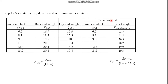The dry unit weight is determined using the formula: dry density = bulk unit weight / (1 + water content). You can refer to the video on basic soil mechanics formulas for a derivation. For the zero air void curve, the dry unit weight equals the specific gravity multiplied by the unit weight of water, divided by (1 + water content × specific gravity of solids).